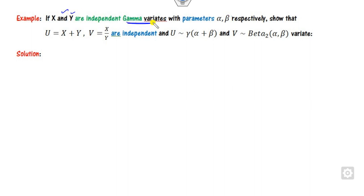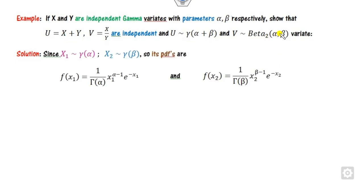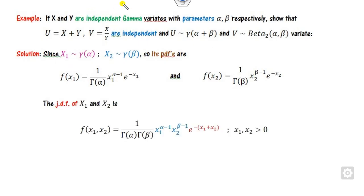Now look at another question. If x and y are two independent gamma variates with only one parameter — that is, the gamma distribution with one parameter — you have to show that x + y is again a gamma distribution, while their ratio will follow the beta distribution of the second kind. This is again straightforward. The PDF of the one-parameter gamma distribution is given here.